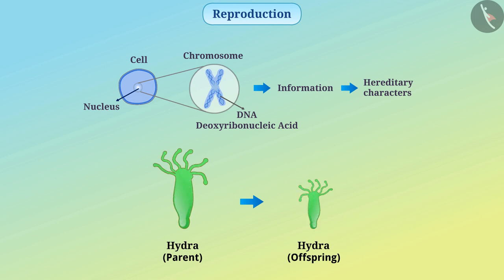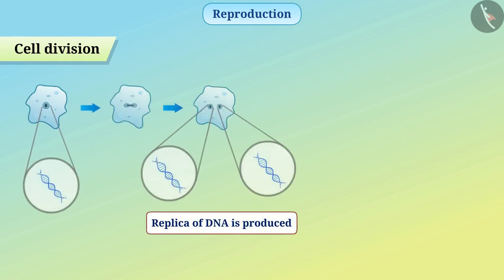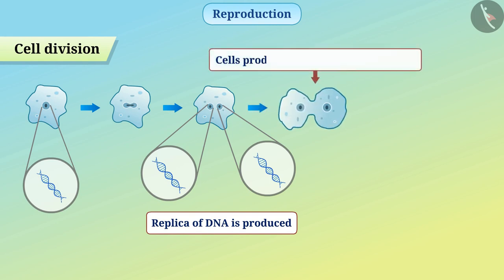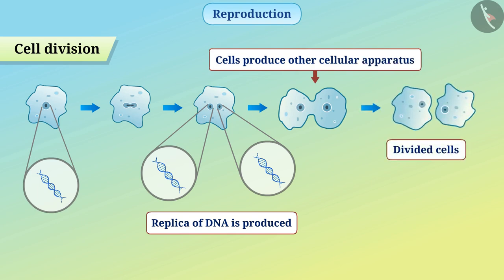Basically, the main event in reproduction is producing a replica of DNA. The replica of DNA in the cell is produced by various chemical reactions. After producing the replica of DNA, cells produce other cellular apparatus, and then it gets divided such that each cell gets DNA.